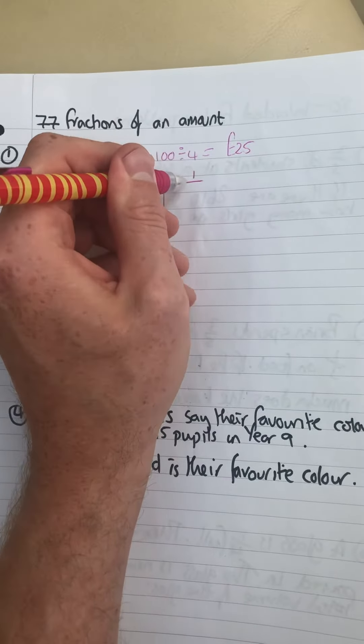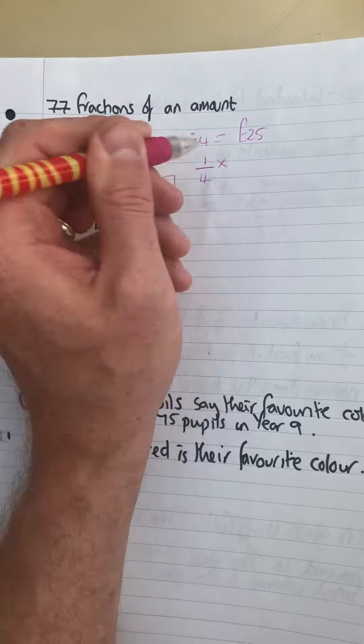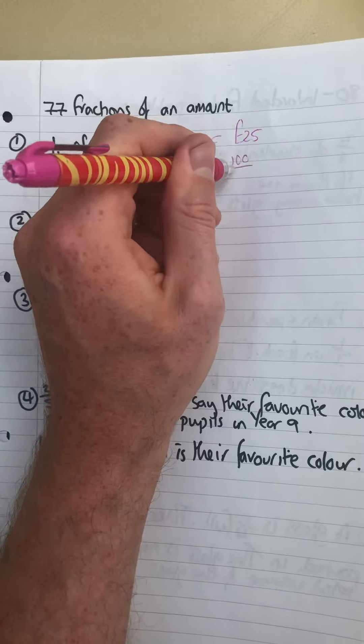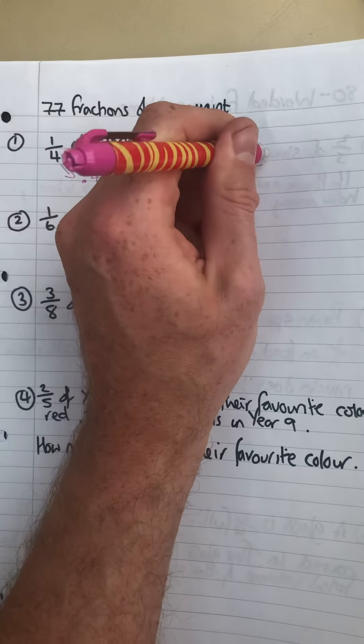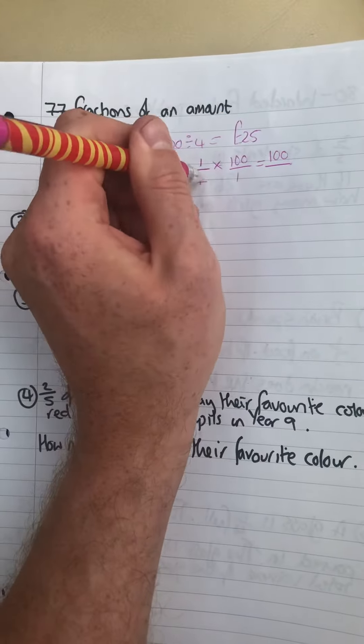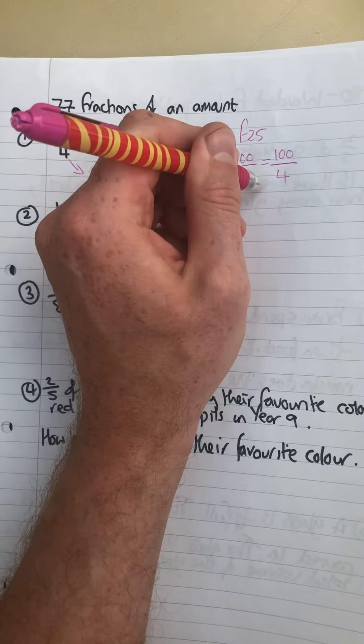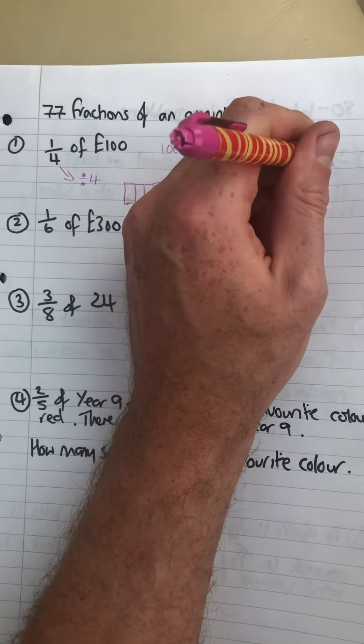The other way you could do it is using multiplying fractions. A quarter times by 100 over one. Well, one times 100 is 100 over four times one is four. So 100 divided by four is 25.